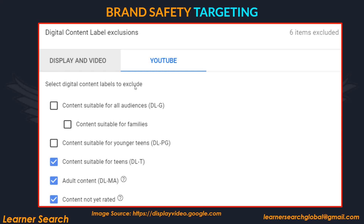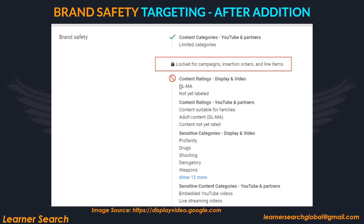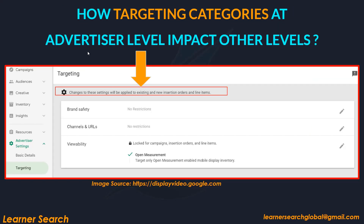For YouTube in brand safety, you can select the digital content labels to exclude. Even for YouTube, whenever you create a YouTube line item or campaign, this setting is available. When you select it at advertiser level, it gets locked at the line item level, so you don't need to configure it every time. Once you do this, it's locked for campaigns, insertion orders, and line items.